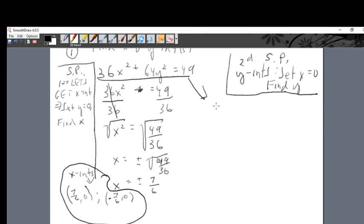I'll call it scrap paper. This is second - we're going to get the y-intercepts and that means set x equals 0 and find y. Take the original on your test paper and set x equals 0. That means 36x² is going to turn into nothing. What do we have left standing? 64y² = 49 because 36 times 0 is 0.